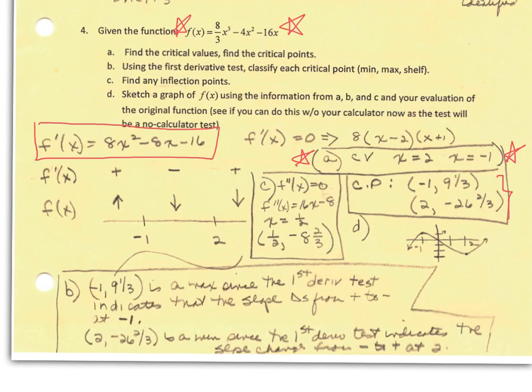So you can do this using your calculator. You don't need to do it by hand. Now we're going to use a first derivative test, and we're going to classify each critical point as a min, a max, or a shelf, depending upon the outcome of the first derivative test.